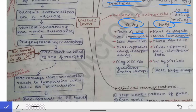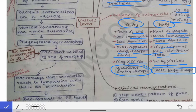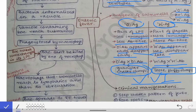Since O antigen is less immunogenic, it will have a lower antibody titer, while H antigen is more immunogenic so it will have a higher antibody titer. O antibody appears early and hence disappears early, but H antibody appears late and hence disappears late. When O antigen reacts with O antibody, there is granular chalky clump formation. When H antigen reacts with H antibody, there is loose fluffy clump formation. These are very important viva questions.